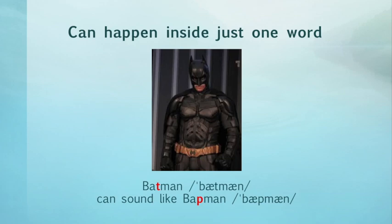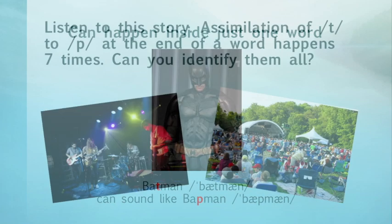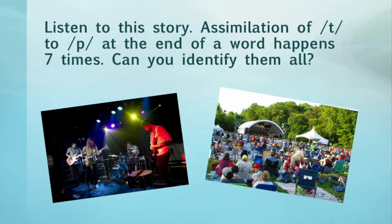But since we're looking at connected speech, we're only going to be focusing on when this happens at the border between two words. To help you hear this type of assimilation, I'm going to say a story. Listen and see if you can identify all seven times this type of assimilation happens.